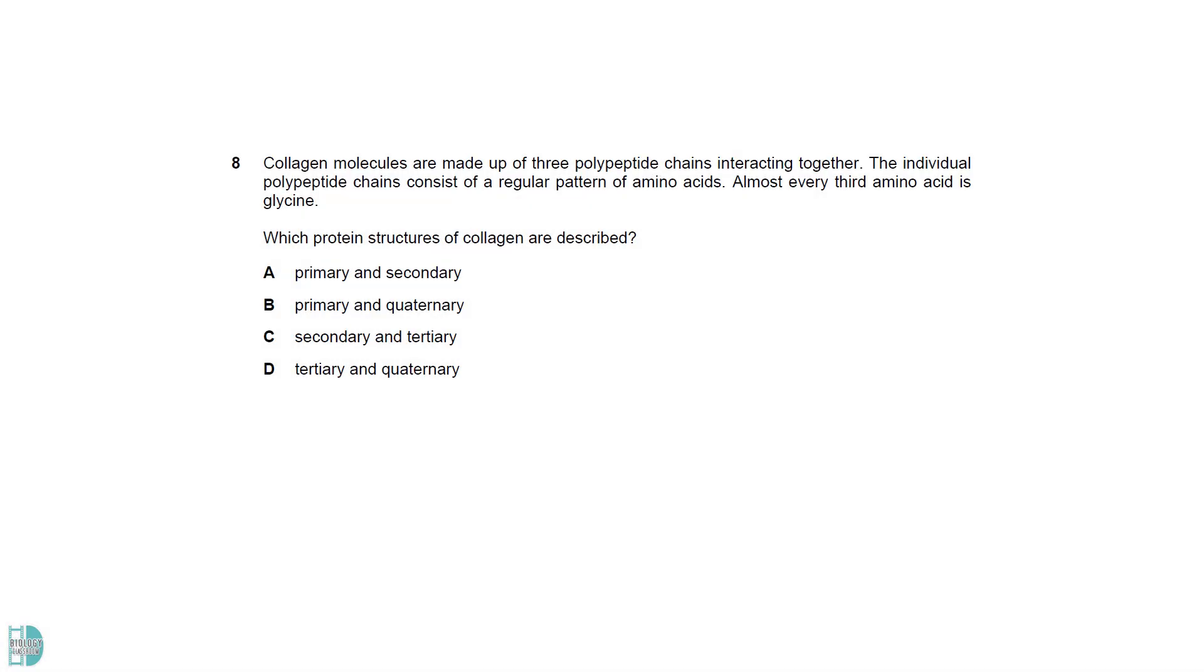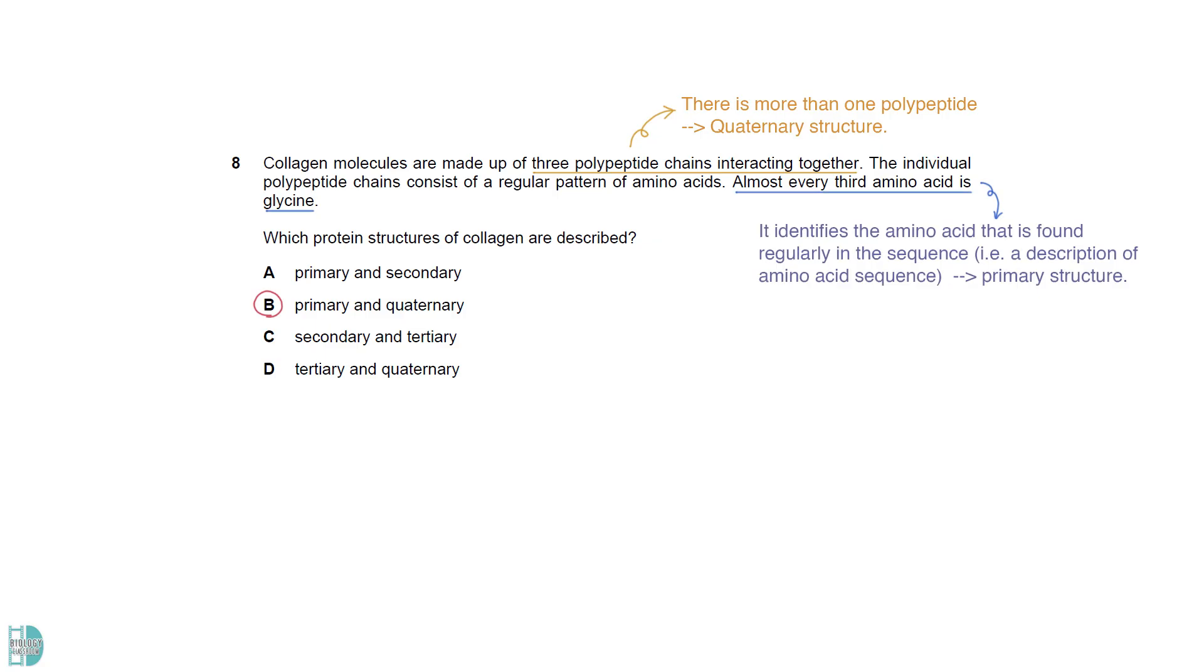Quaternary structure is described here, as we know that there is more than one polypeptide in a collagen molecule. It also identifies the amino acid that is found regularly in the sequence, which is the primary structure. The information does not include a description of the alpha helix or beta-pleated sheet formation in the protein, so the secondary structure is not included. It also does not mention the interactions between the R groups, which are responsible for the protein's 3D arrangement.